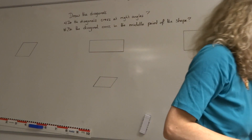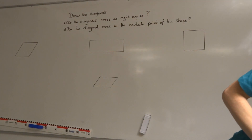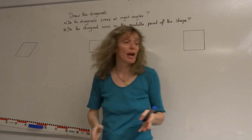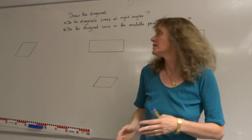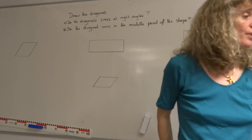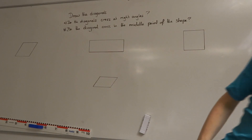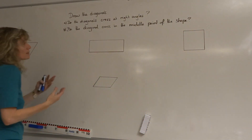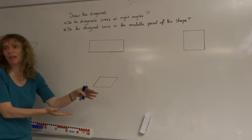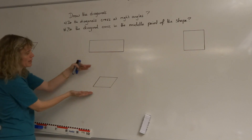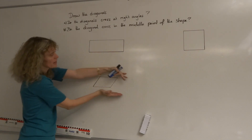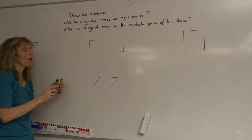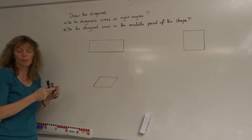This question is about diagonals in parallelograms. A parallelogram is a shape that has two sides that are parallel. This is what we typically think of as being a parallelogram. These two sides are parallel — these lines go on and on forever and will never meet up.